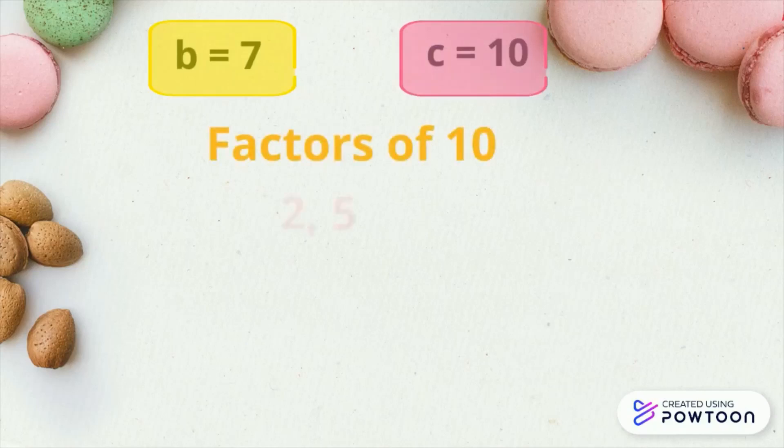2 and 5 is 10, 1 and 10, negative 2 and negative 5, negative 10 and negative 1 is also positive 10. Do you agree?